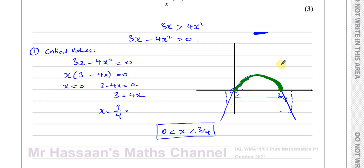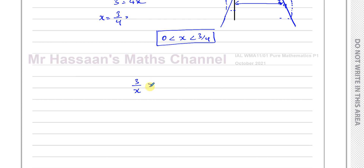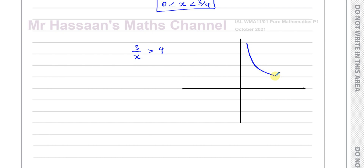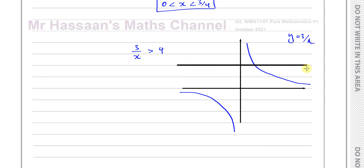There's an alternative method by thinking about the graph. We can sketch y equals 3 over x and y equals 4 on the same axes and see where one is greater than the other. The graph of y equals 3 over x is like 1 over x, just stretched — it has the same shape with asymptotes at x equals 0 and y equals 0. The line y equals 4 is a horizontal line. They intersect when 3 over x equals 4, so when 3 equals 4x, giving x equals 3 quarters.